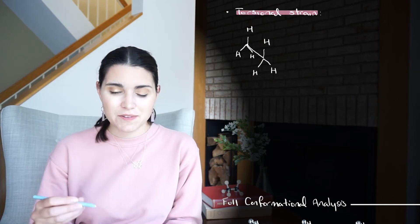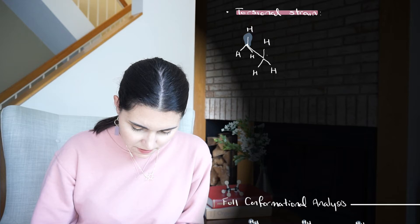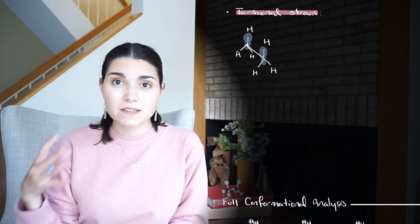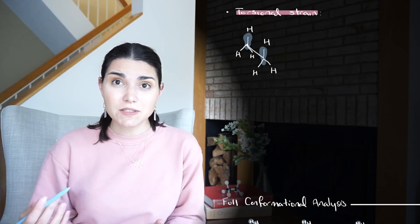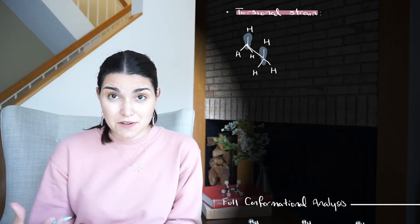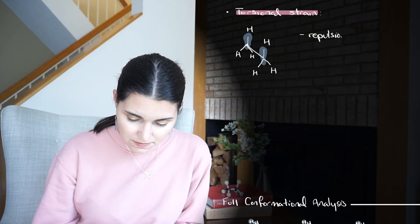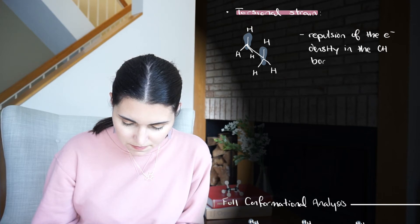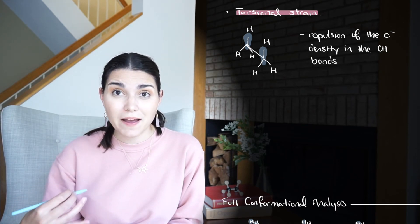Here we have our ethane molecule, and we've got it drawn out in the sawhorse projection here. So let's highlight where those bonding orbitals are on these two carbon-hydrogen bonds here. Torsional strain is repulsion of the electron density in the CH bonds. They don't really like to occupy the same space, but when that dihedral angle is zero, they're kind of shoving a bunch of electron density into the same area. And that is a destabilizing effect that adds energy to the molecule. The molecule does not want to do that. It's not happy about it. And so the eclipsed conformation ends up being about 12 kilojoules per mole higher than the staggered conformation.